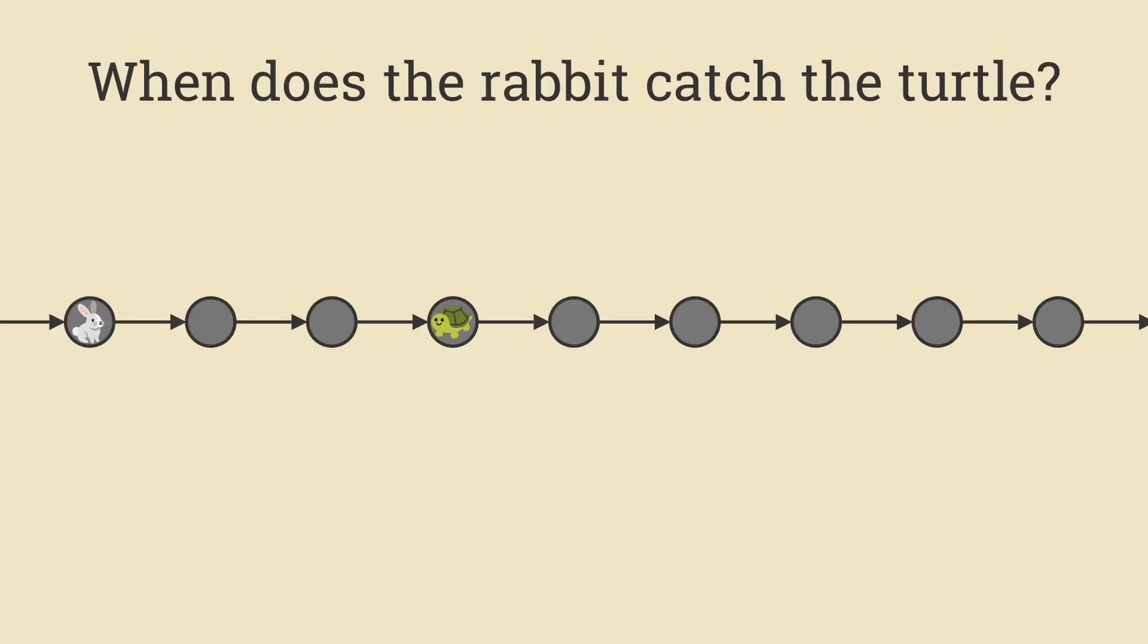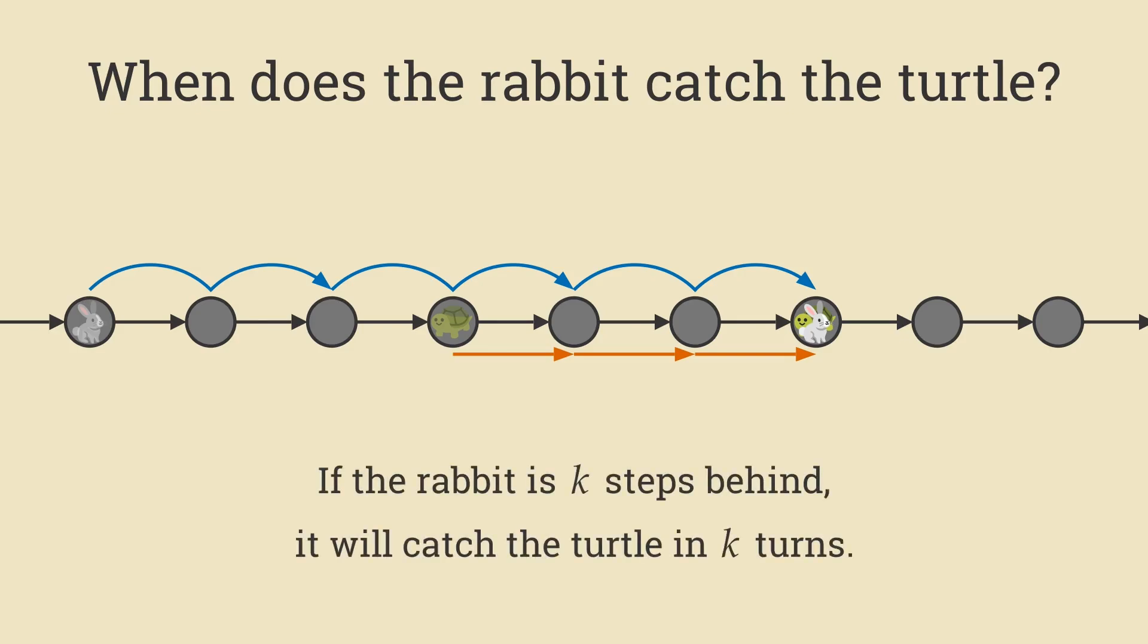One sort of calculation-based way of proving this is to observe that if the rabbit is ever behind the turtle, in this example it's behind it by three steps. If the rabbit moves up two spaces and the turtle moves up one, then the gap between them actually shrinks by one. In this example, the rabbit catches the turtle in three turns. In general, if the rabbit is k steps behind, then it will catch the turtle in k turns.